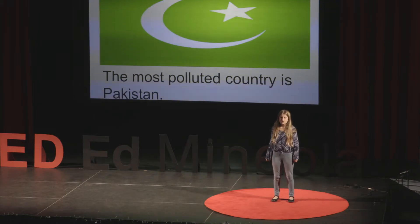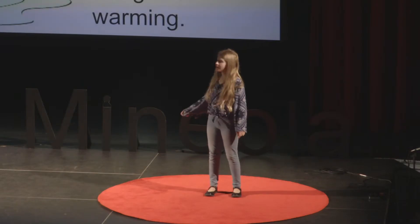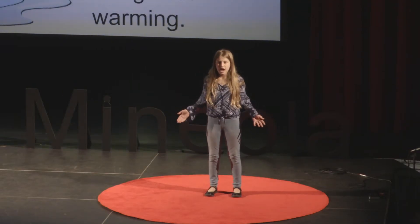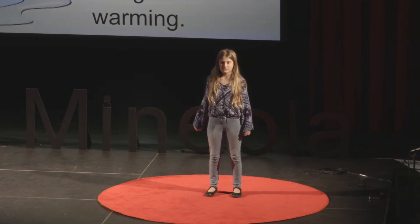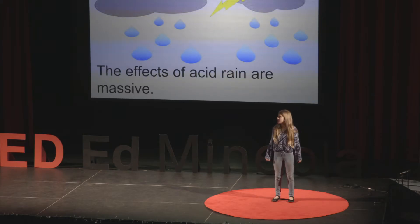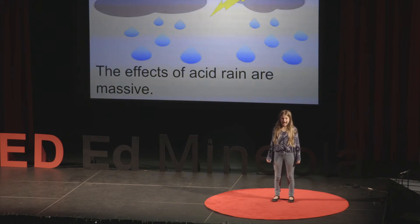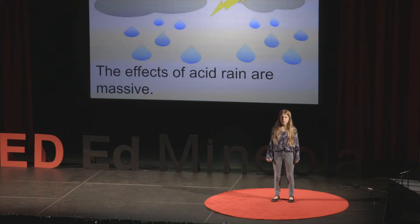In 2017, Saudi Arabia had really bad air pollution, but the most polluted country is Pakistan. How does air pollution affect the environment? Air pollution has many negative effects on the environment, like global warming. Global warming is the warming of the earth, and it is endangering animals. Another type of air pollution is acid rain. The effects of acid rain are massive — it harms animals and the environment by dissolving nutrients and helpful minerals in the soil and washes them away before trees and other plants can use them to grow.